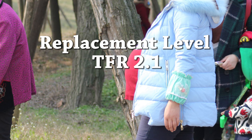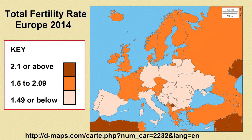On average, a total fertility rate of 2.1 children per woman is considered to be the replacement rate. Today, in many European countries, women are giving birth to less than this figure. In many cases, the only thing stopping the population from shrinking has been high rates of net migration.